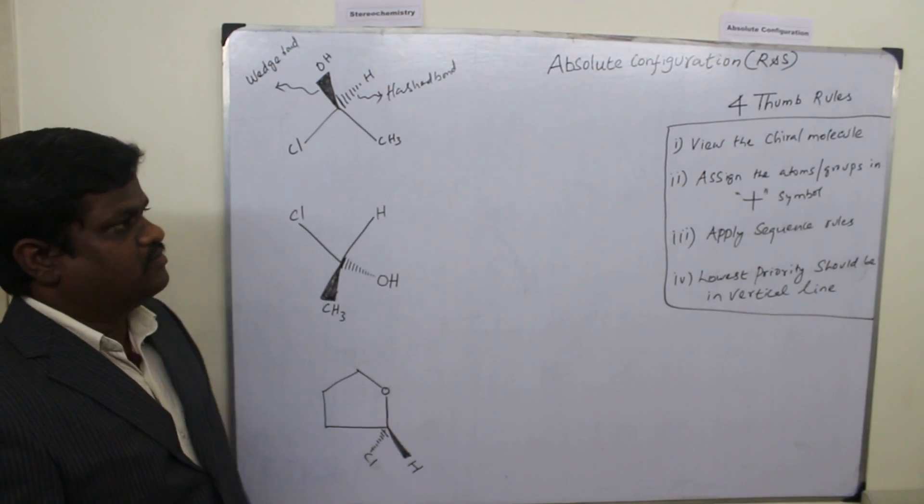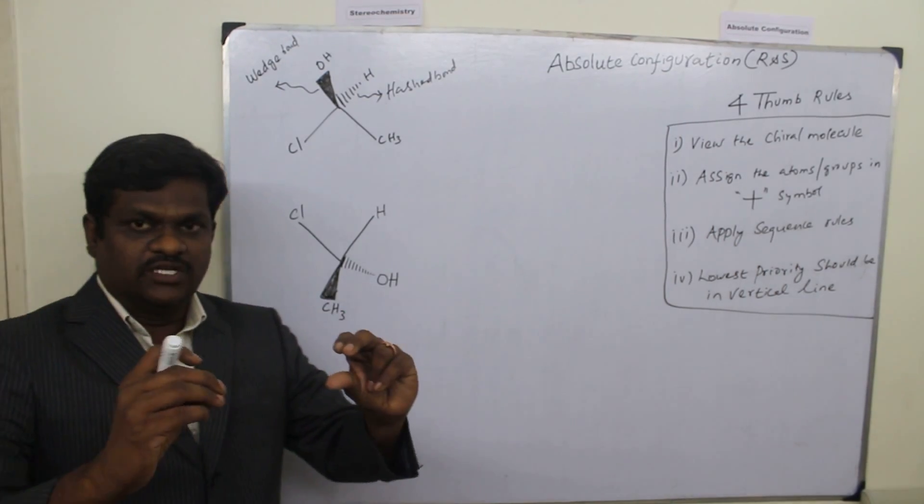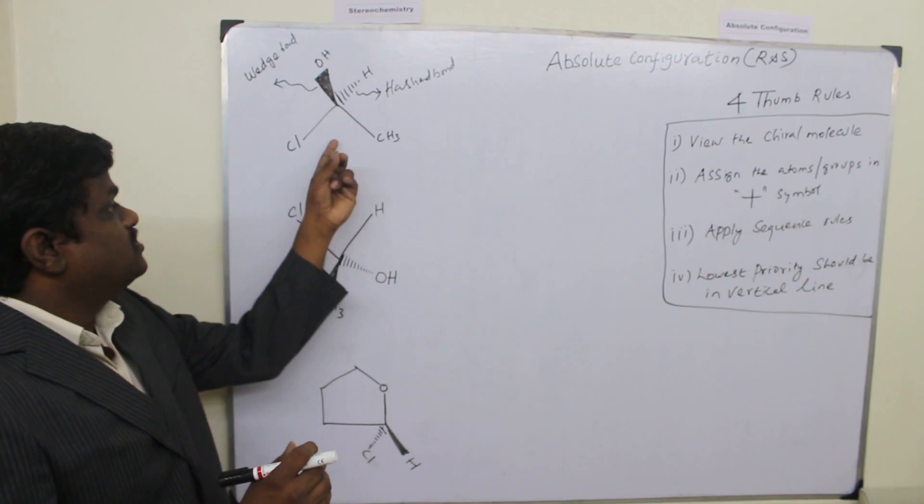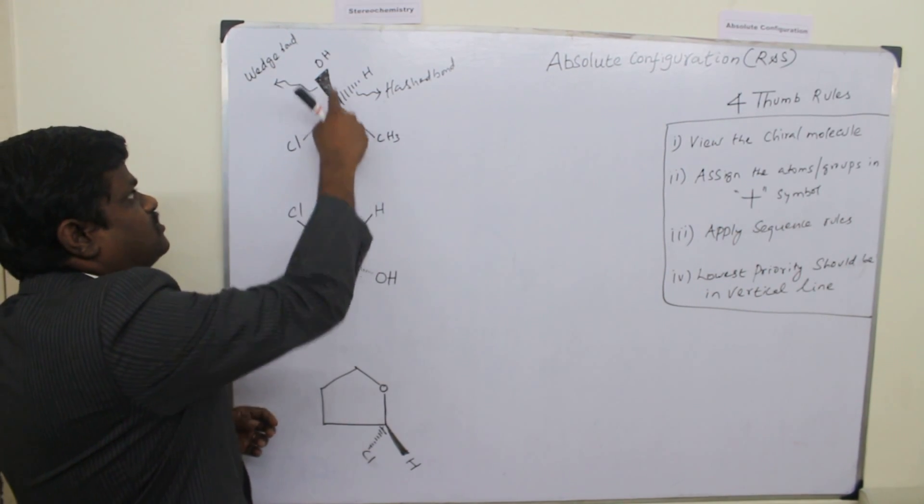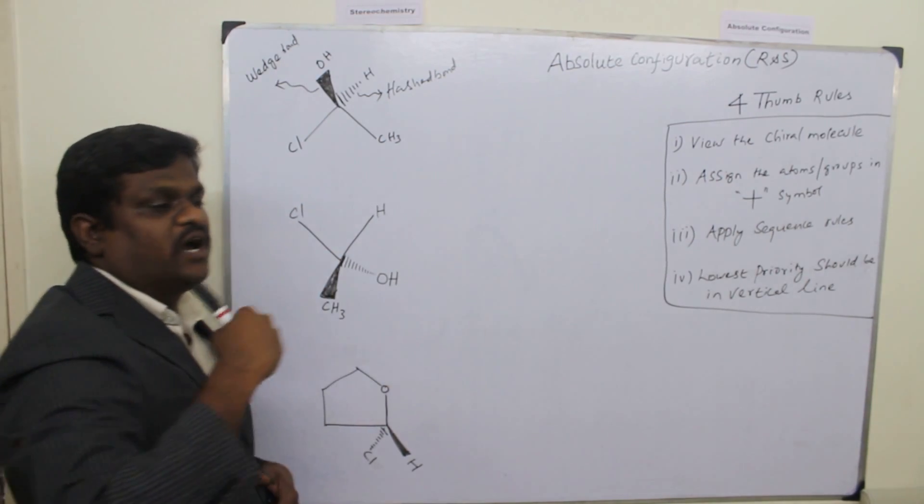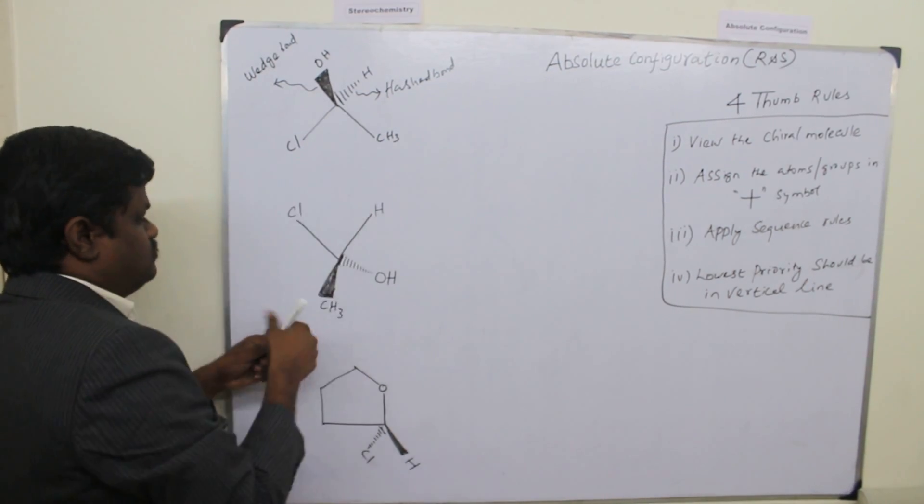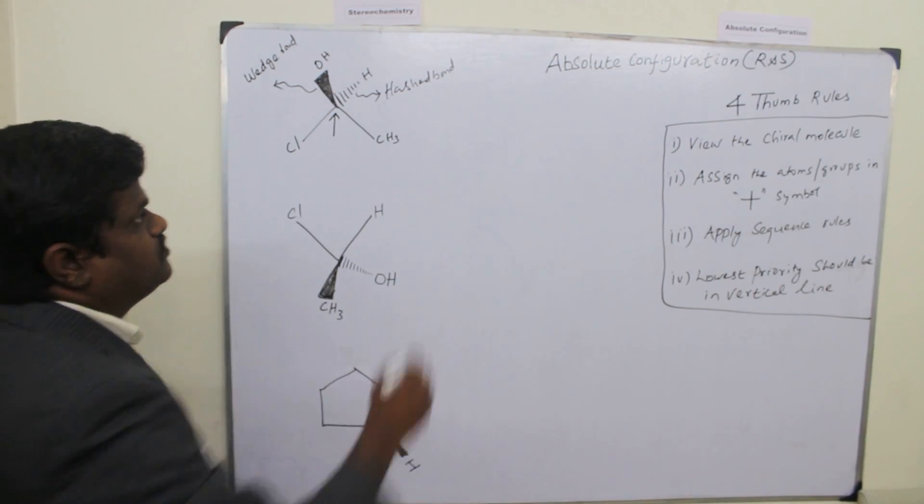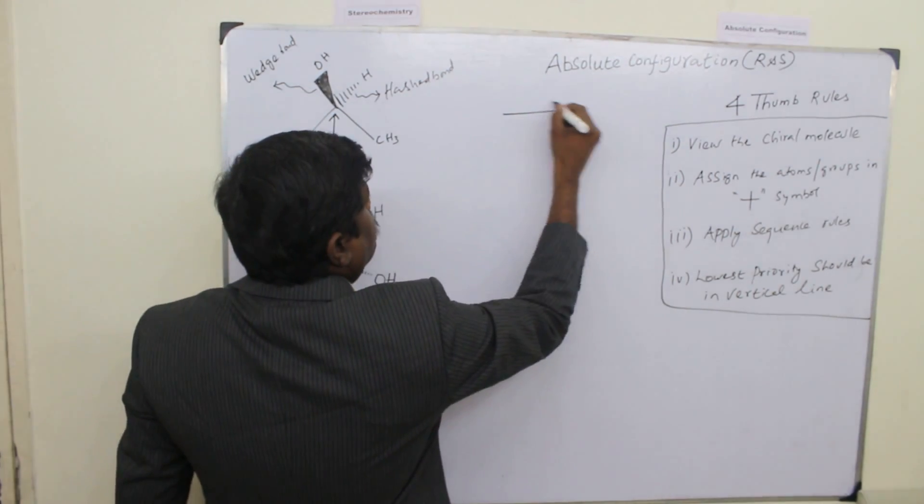So the first rule is we have to view the chiral molecule in such a way that both wedge bond and ash bond have to move away from us. So that means we have to view in this direction. Okay, this is the first step, first rule.